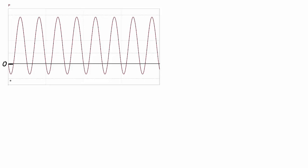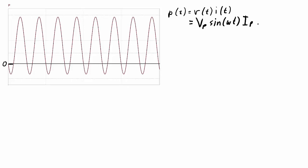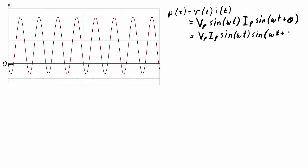Let's look at the relationship between used power and oscillating power. The equation for power is found by multiplying the voltage equation times the current equation. For voltage, we have some peak voltage Vp, sinusoidal with frequency omega. For current, we have some peak current Ip, also sinusoidal at the same frequency, but with a phase shift theta. Bringing the constants to the front, we get Vp·Ip times sine(ωt) times sine(ωt + θ).